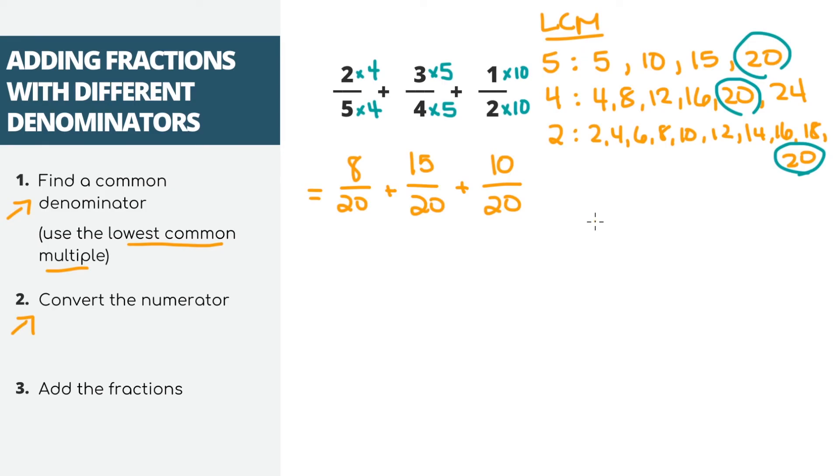Now that all of our fractions have the same denominator, we can do our last step and just add. So when we're adding fractions with the same denominator, we can copy over the denominator, 20, then add the numerators. So 8 plus 15 plus 10 is 33. This is our final answer, we got that these fractions added together is 33 over 20.